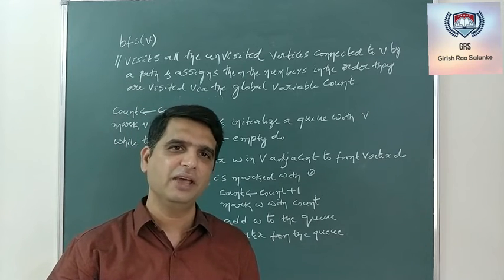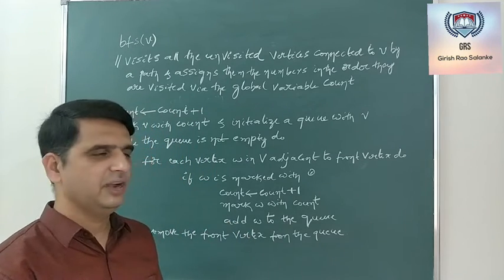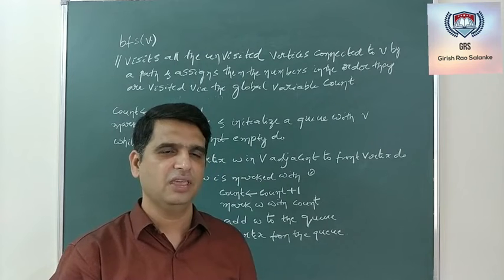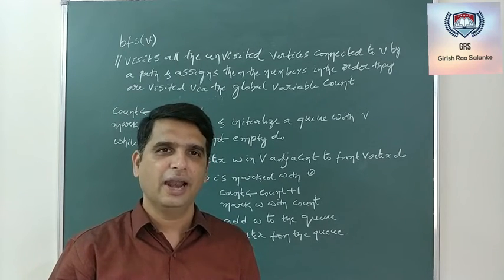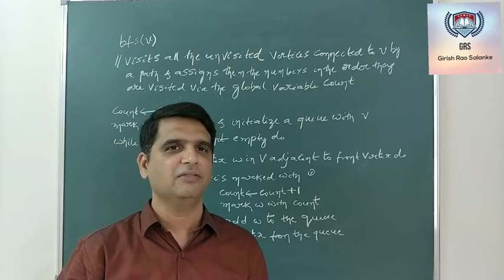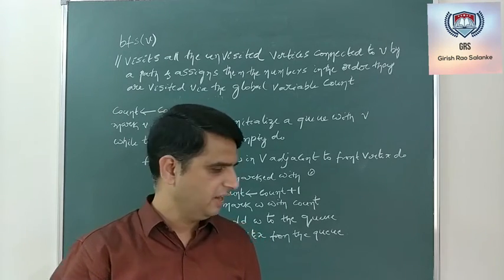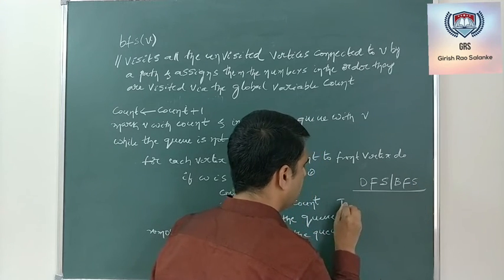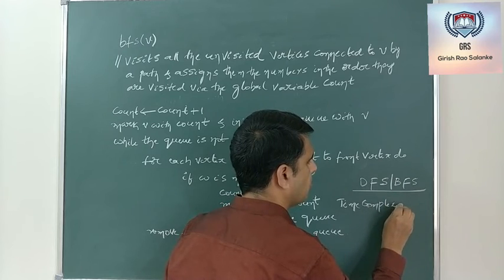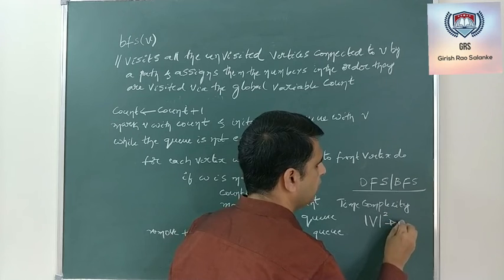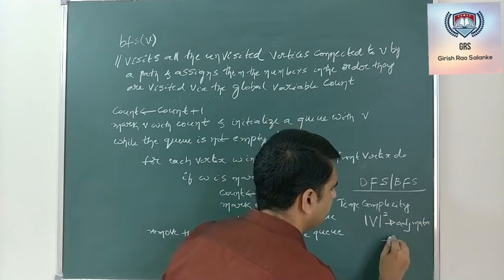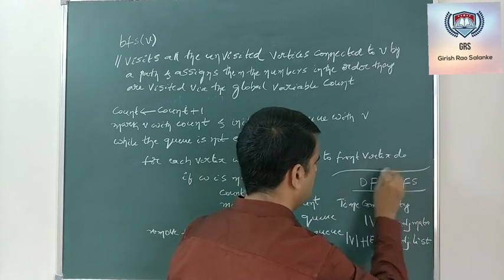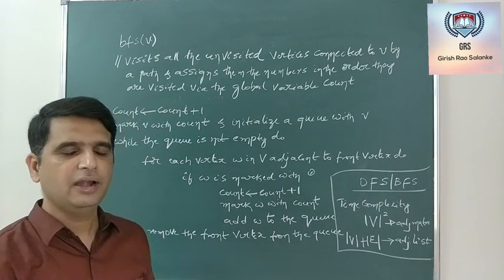The time complexity of both BFS and DFS algorithms is the same. If the graph is represented as an adjacency matrix, both DFS and BFS have a time complexity of O(V²). If the graph is represented as an adjacency list, the time complexity is O(V + E).